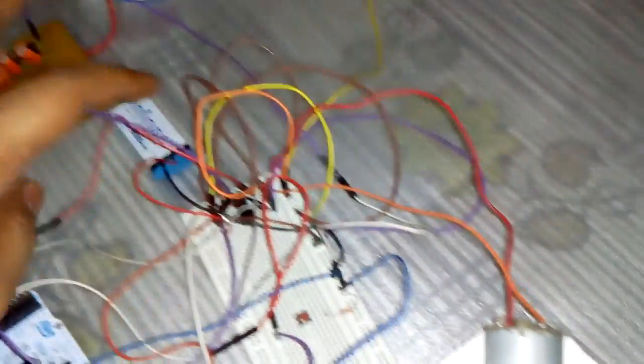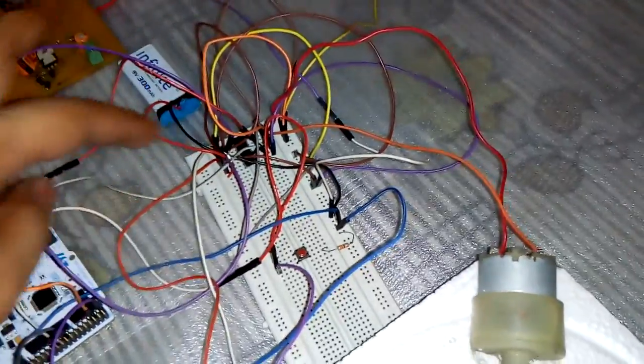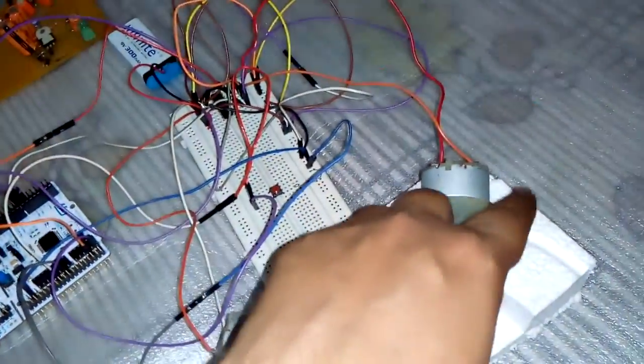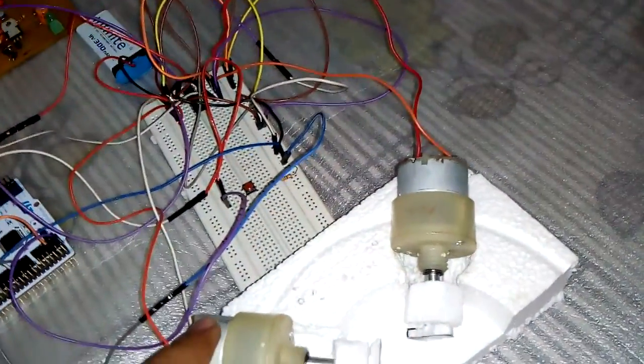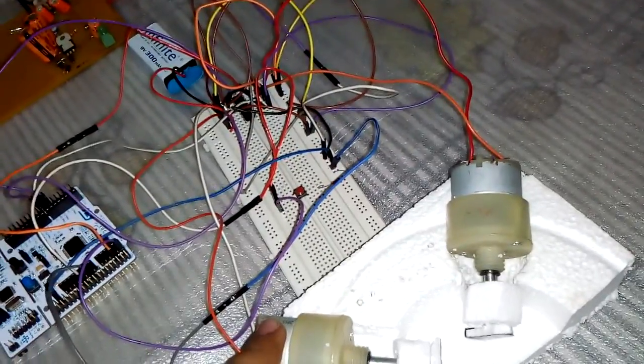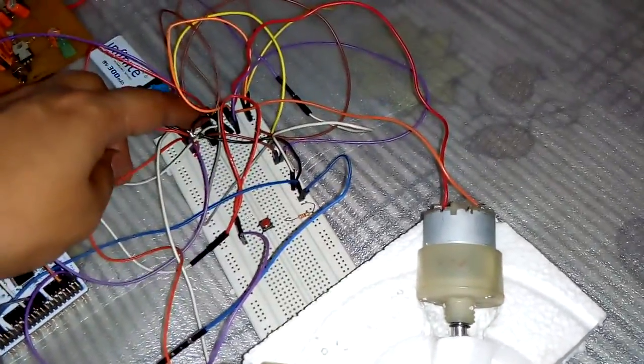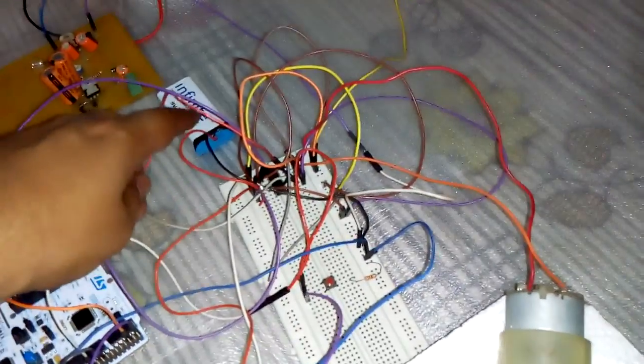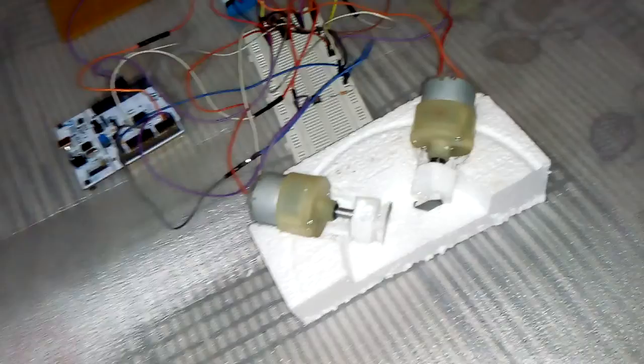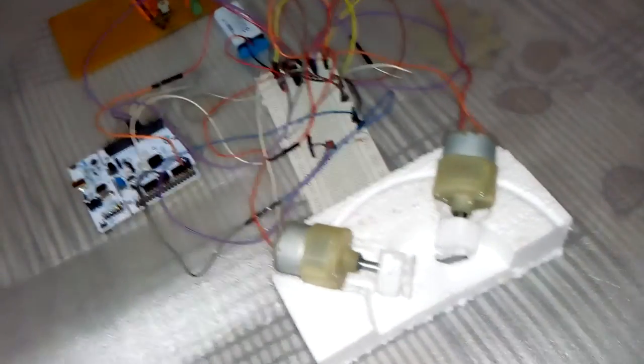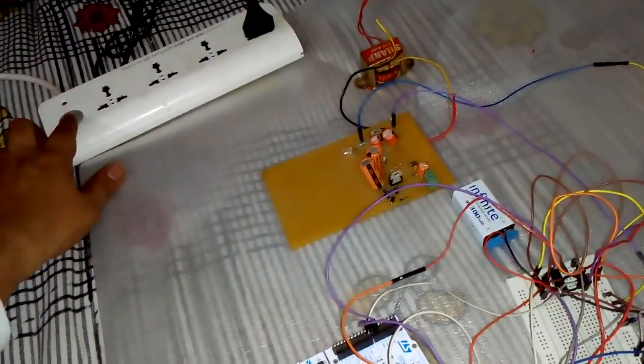We are using L293D IC to drive the motors. The external source for this L293D IC is a 9V battery. Now let's start the demo. We switch on the power button.